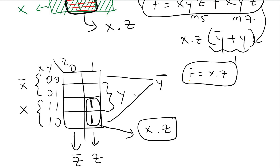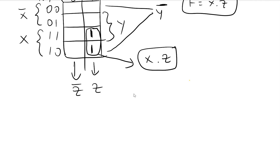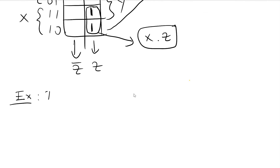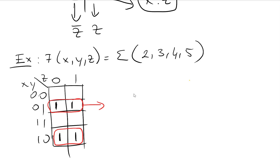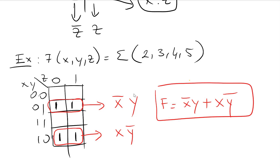Let's do another example. Given f(x,y,z) with minterms 2, 3, 4, and 5, we draw the K-map and place ones at m2 (010), m3 (011), m4 (100), and m5 (101). We cannot make a group of eight or four, but we can make two groups of two. The first group represents x'·y, and the second group represents x·y'. So the simplified function is f = x'·y + x·y'.